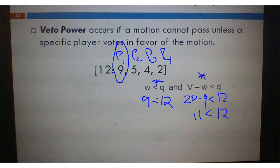And notice that 5, 4, and 2, or player 2, 3, and 4, these three, they can't win it by themselves. 5 plus 4 plus 2, that's 11. That's not enough. So, someone who is not necessarily a dictator, but we can't have the motion passed without them.